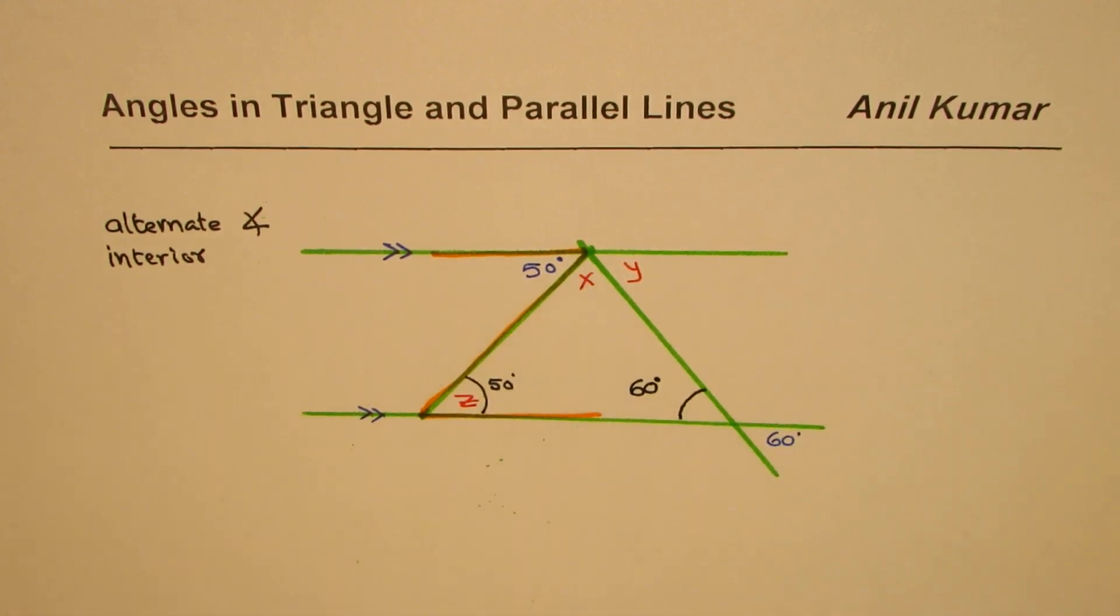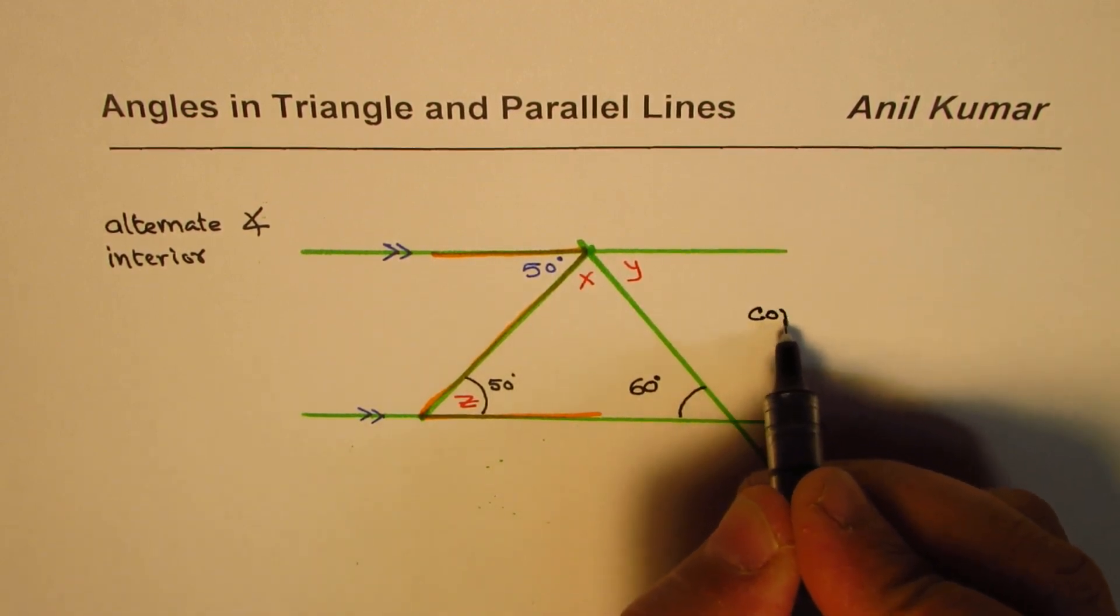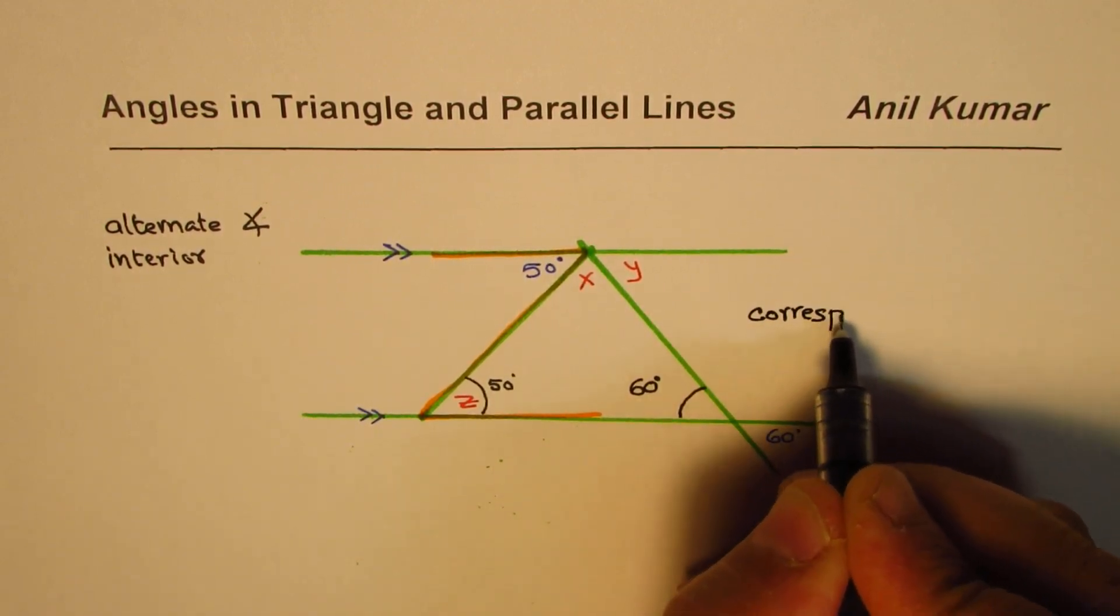Once you get that, you can find x. The other way to find x is that you can see that y and 60 degrees given to us are corresponding angles, right? So these are called corresponding angles.